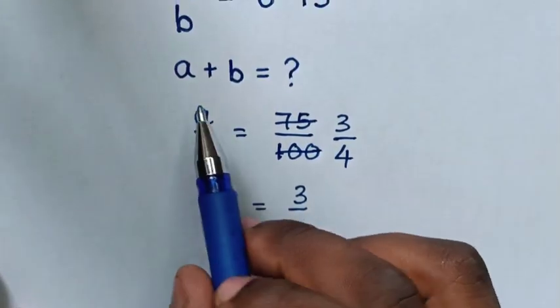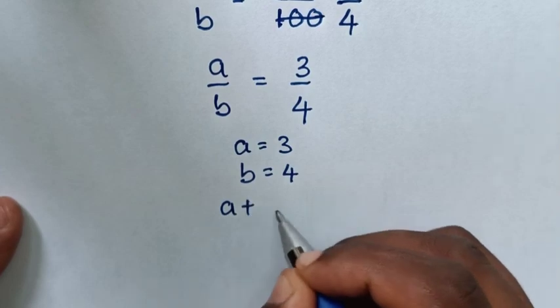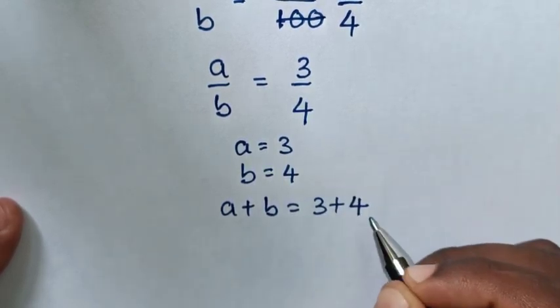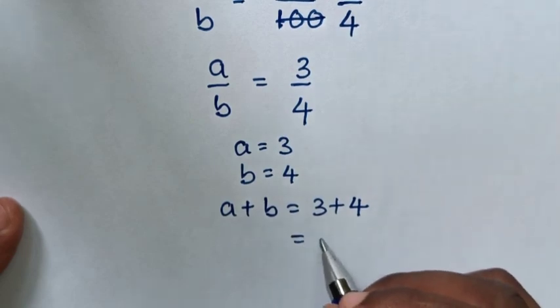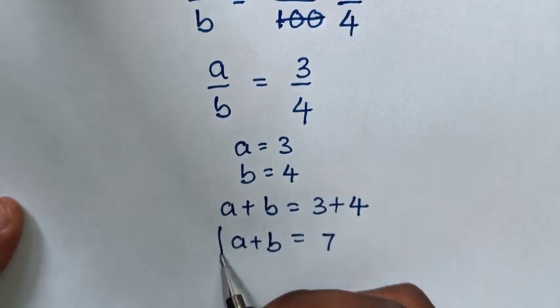But our problem is asking to find the value of A plus B. So here A plus B is equal to 3 plus 4, which is equal to 7. So this is the answer for the value of A plus B.